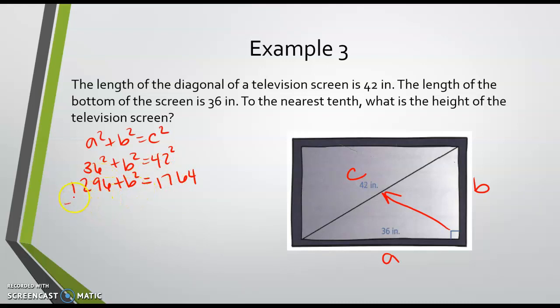All right, so from here this is what I have. I'm going to subtract the 1296 from both sides, and so then b squared will equal 468. I need to get b by itself, so I'm going to square root this, and so then b will equal...